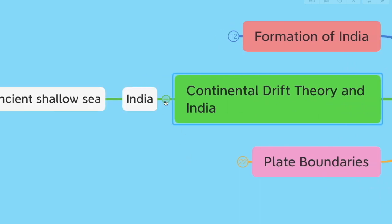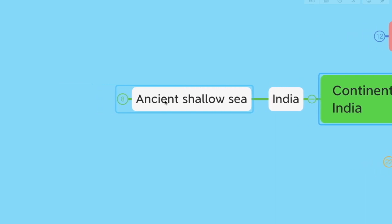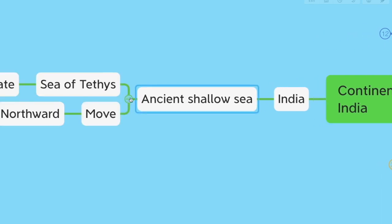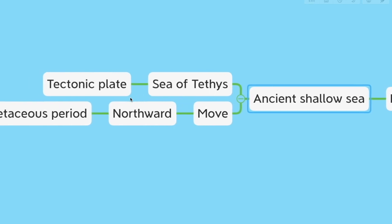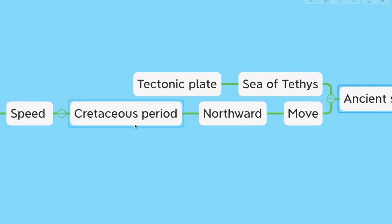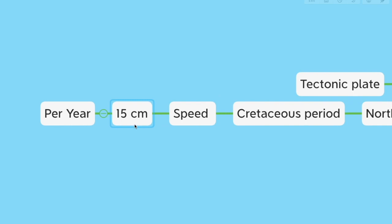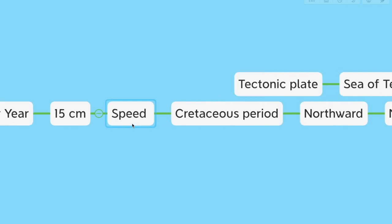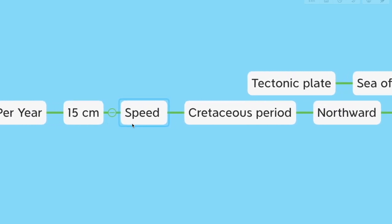India and an ancient shallow sea called the Sea of Tethys were on a tectonic plate. It began to move northwards about 90 million years ago during the Cretaceous period, at the speed of 15 centimeters per year. The Cretaceous period was about 145 to 65 million years ago. So the plate was moving at 15 centimeters per year — only that much.